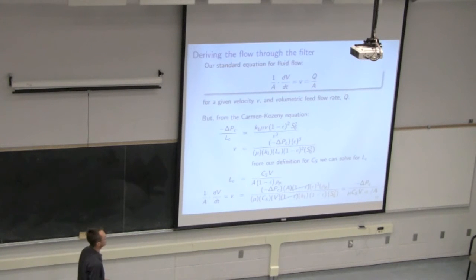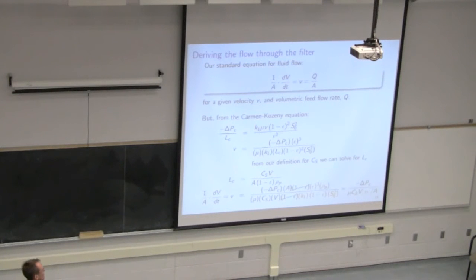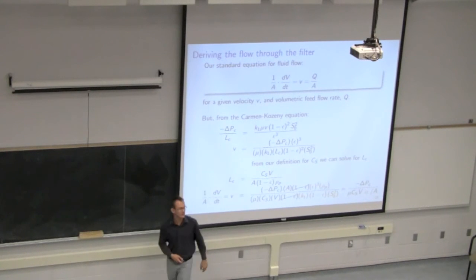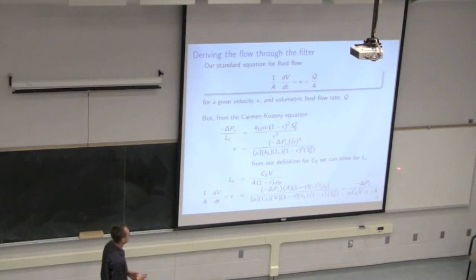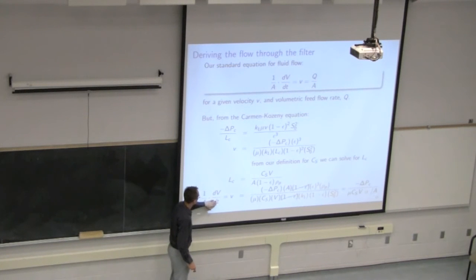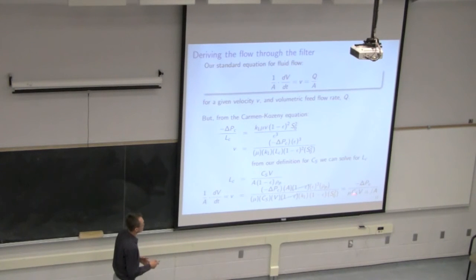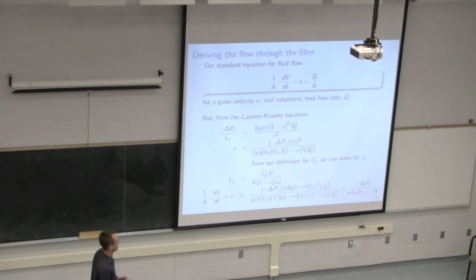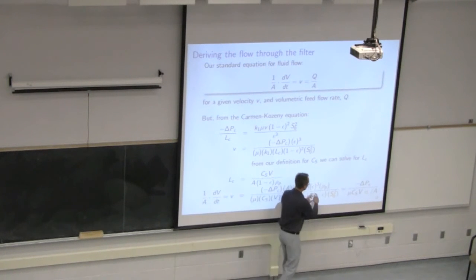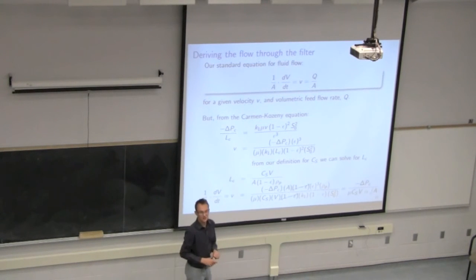We did an exercise and substituted the rearranged LC term from the mass balance, expressing the cake length in terms of the slurry concentration, the volume of filtrate V, the cross-sectional area, the particle density, and epsilon. We substituted that into the Carman-Kozeny equation, and we ended up with the equation we will start with in today's class: volumetric throughput per unit time divided by A — which we call flux — equals the pressure drop across the cake, divided by viscosity, slurry density, filtrate volume V, and a new term alpha.